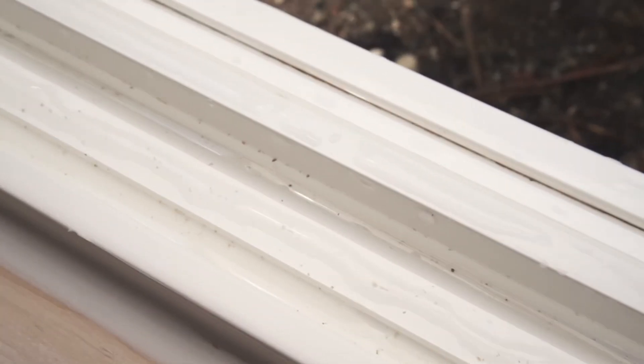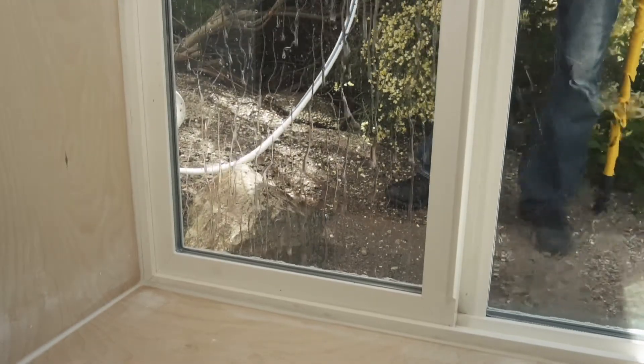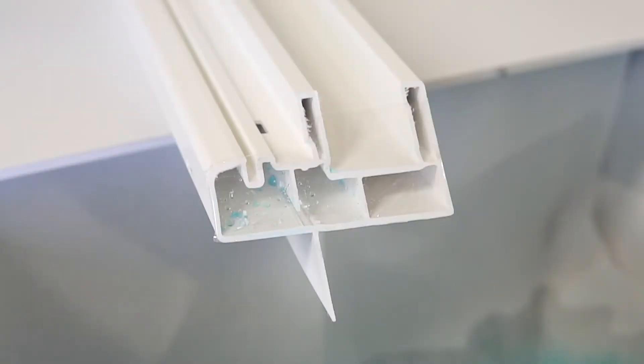Do not be alarmed if there is a minimal amount of water in your window track. It is normal for a small amount of moisture to accumulate during a heavy rain or while cleaning your windows.